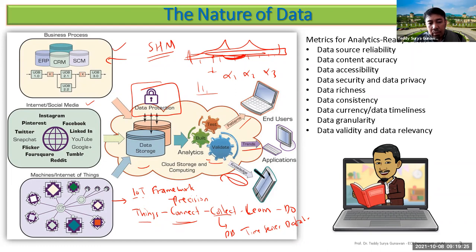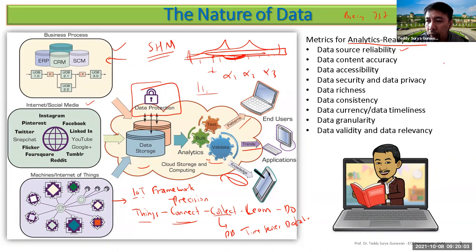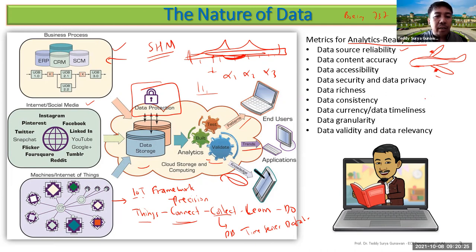Now let's look at the matrix for analytics-ready data — how we ensure data is ready to be analyzed. The first criterion is data source variability: it needs to be reliable. An important example of reliability is the Boeing 737 Max accident, which involved two sensors on the wing.